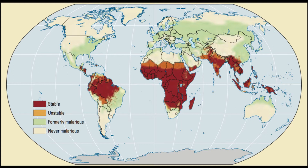The parasite that causes malaria can kill someone within 24 hours of symptoms appearing. Symptoms are kind of like the flu — you get a fever, a headache, chills. The main difference between the flu, even COVID, and malaria, is that malaria is caused by a parasite.